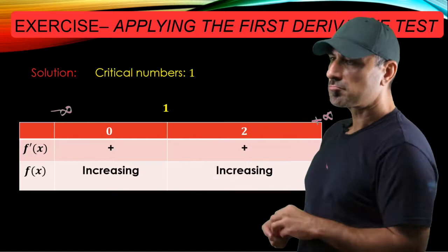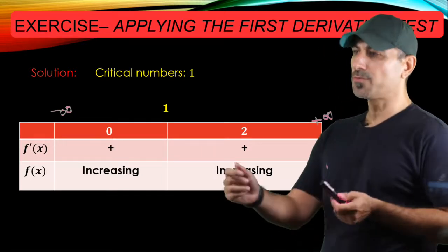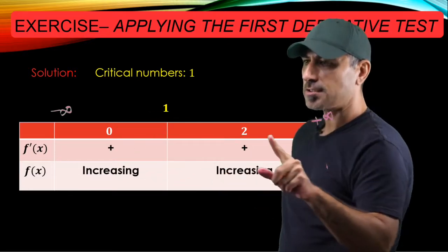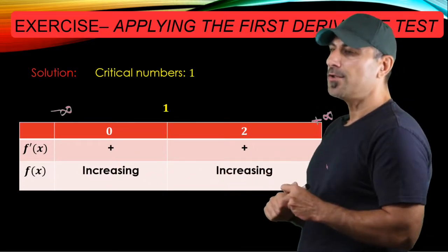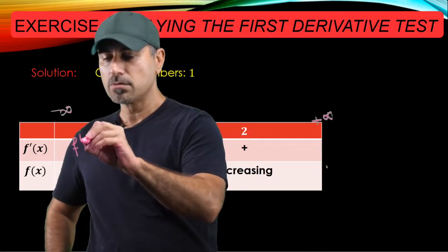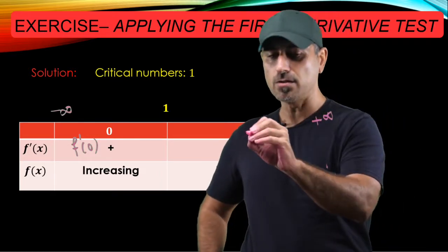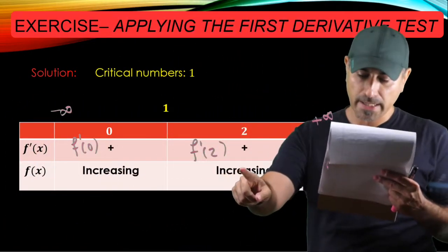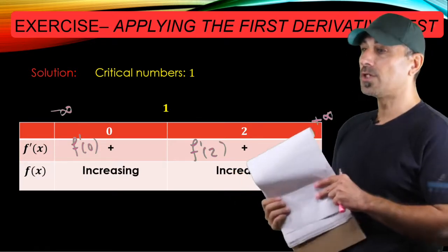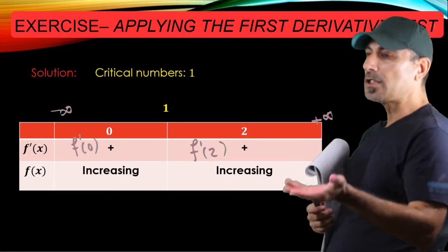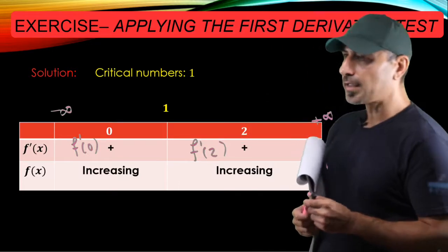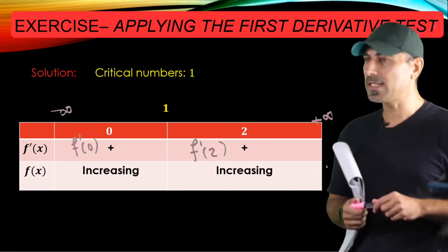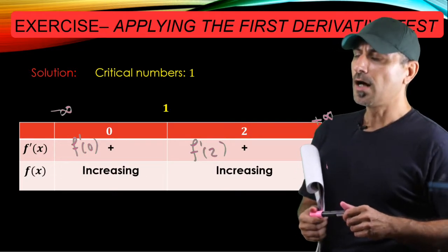The only critical number is one, giving us two sub-intervals: negative infinity to one, and one to infinity. I chose sample points zero and two for each sub-interval to check the sign of f prime. F prime at zero is four, and f prime at two is 2 times 2, which is also four. So f is increasing on the interval negative infinity to one, and also increasing on the interval one to infinity.